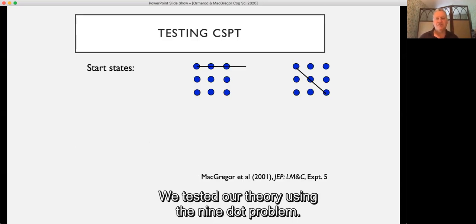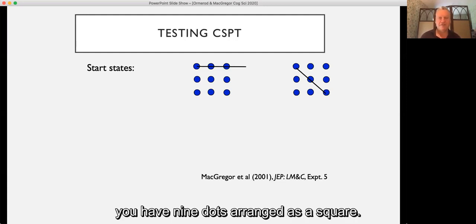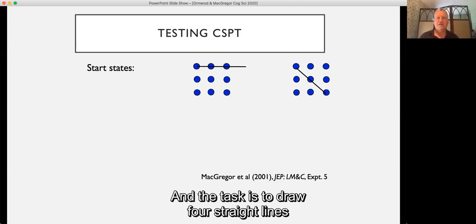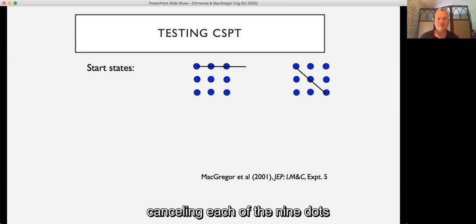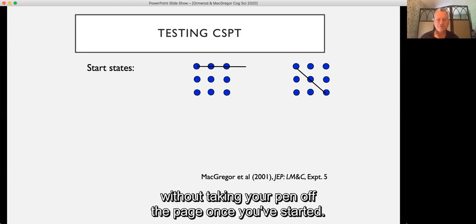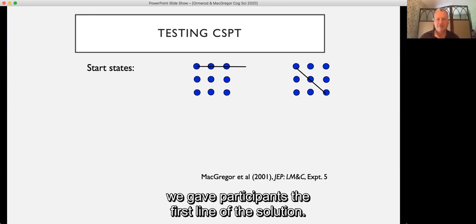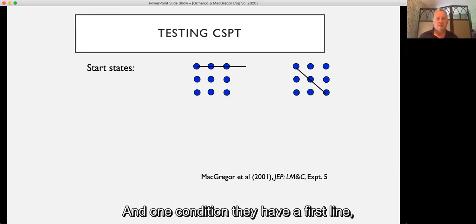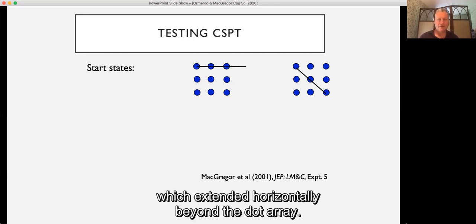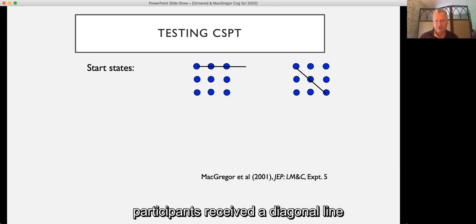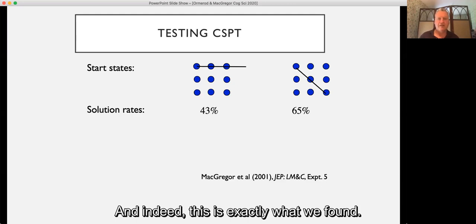We tested our theory using the nine-dot problem. In the nine-dot problem you have nine dots arranged as a square, and the task is to draw four straight lines canceling each of the nine dots without taking your pen off the page once you've started. In one of our experiments we gave participants the first line of the solution. In one condition they had a first line which extended horizontally beyond the dot array, and in another condition participants received a diagonal line that stayed within the dot array. All theories including RCT would predict that the horizontal line would be more facilitative as a first move than the diagonal line. CSPT, on the other hand, predicts that the diagonal line would be more facilitative, and indeed this is exactly what we found.